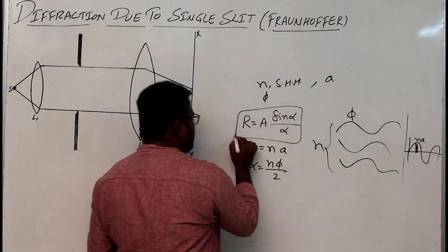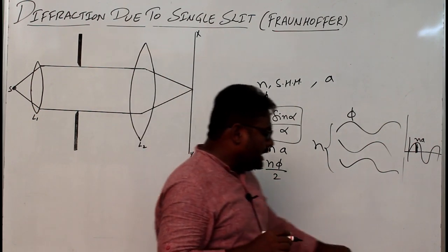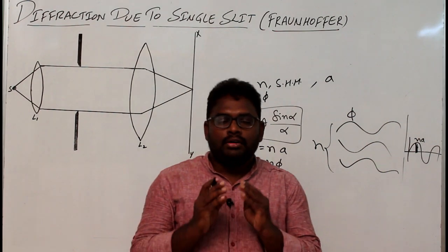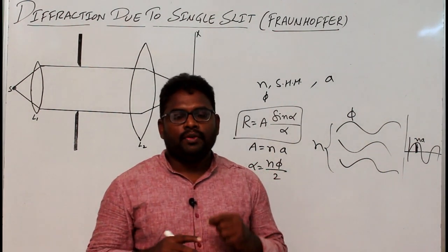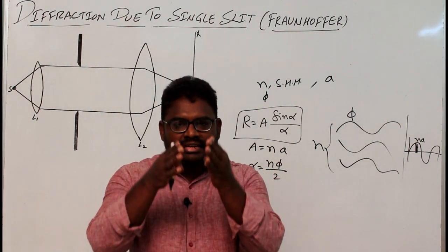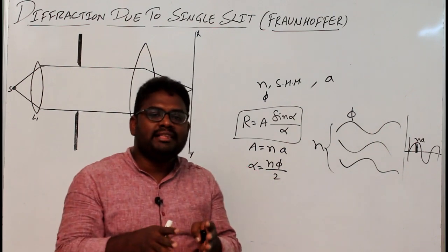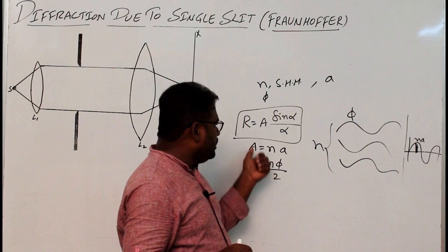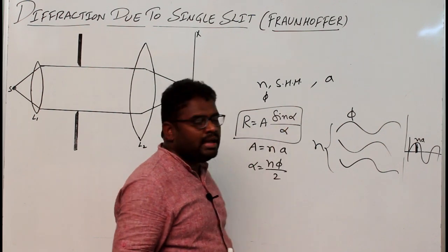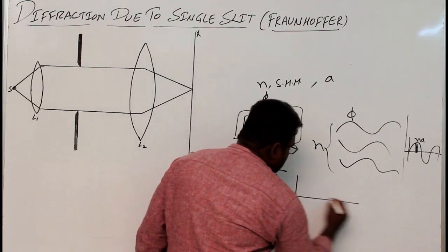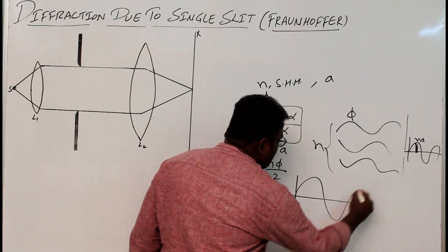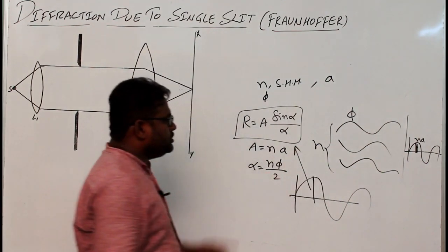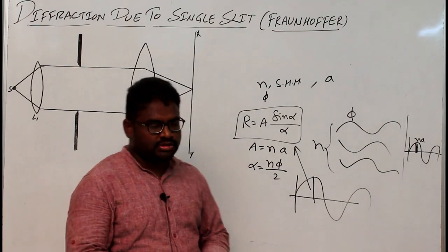To repeat: when there are n number of SHM waves superimposing, the resultant amplitude on the screen is given by R = A·sin(α)/α. This is the result we need to remember in order to discuss diffraction due to a single slit.